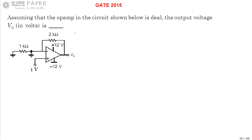Hello, we are discussing GATE 2015 ECE paper. Look at the circuit diagram consisting of an op-amp, and the op-amp is given as ideal. Then what is the output voltage V0?